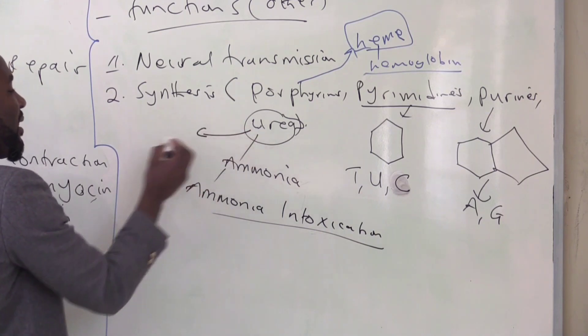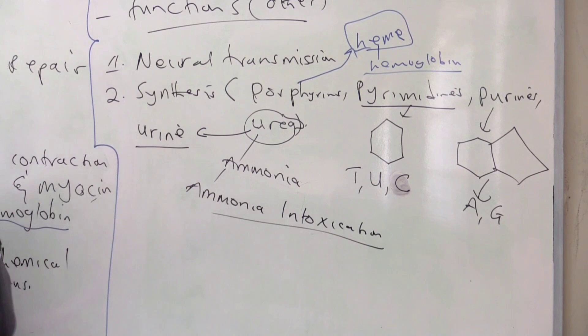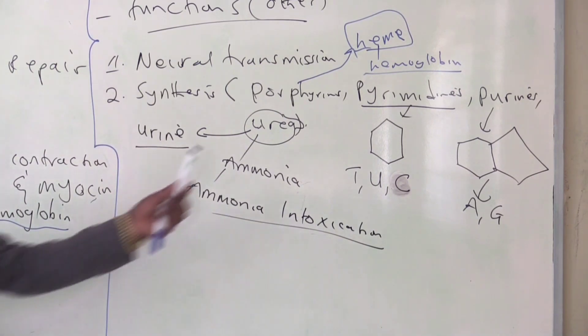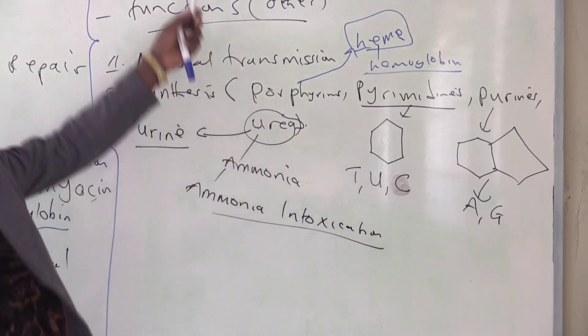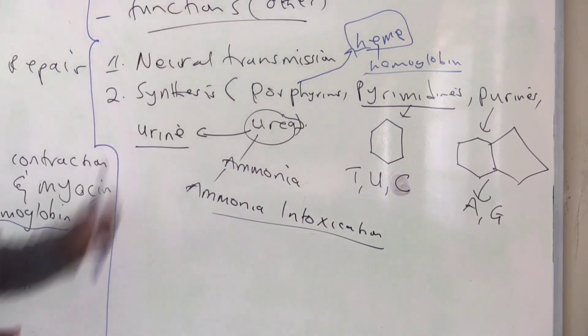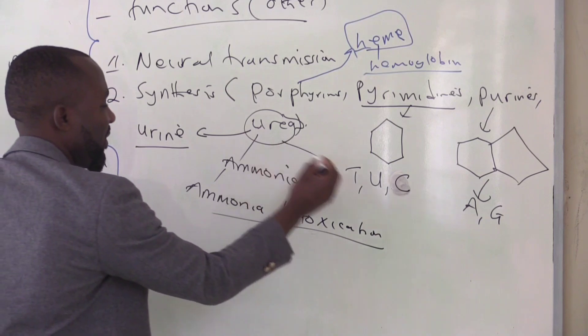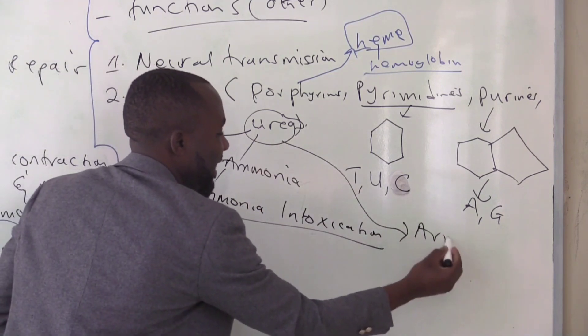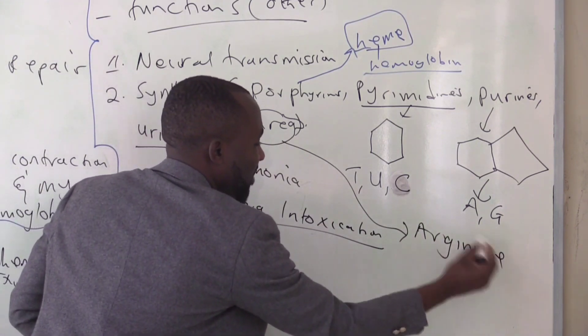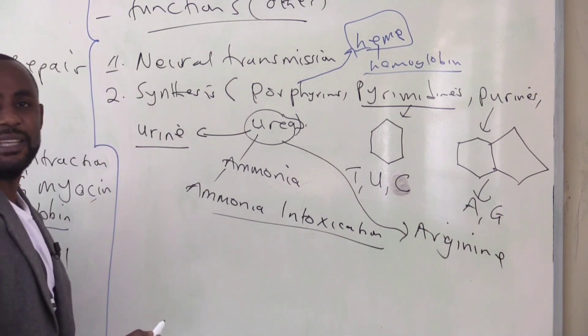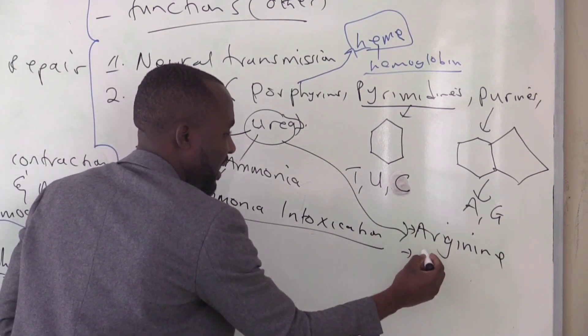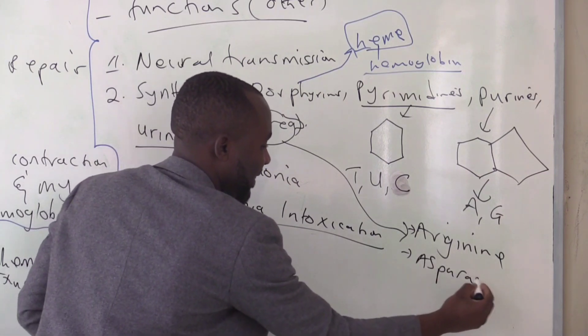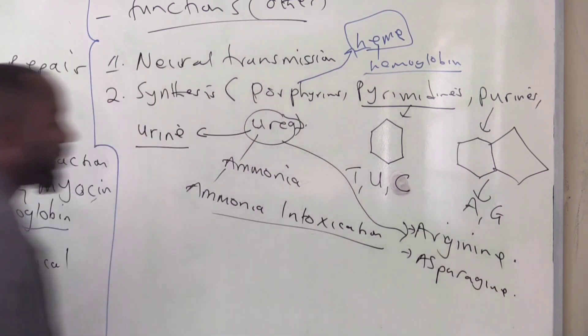And this urea, we normally excrete it or convert it to urine, so that we get rid of the ammonia. Now we are saying that this urea, for it to be made, you need help from amino acids, some of them. And examples we can talk about of these amino acids is arginine, which is part of the amino acid used in the urea cycle. Another amino acid we can talk about is asparagine.